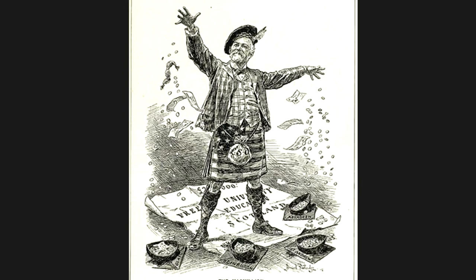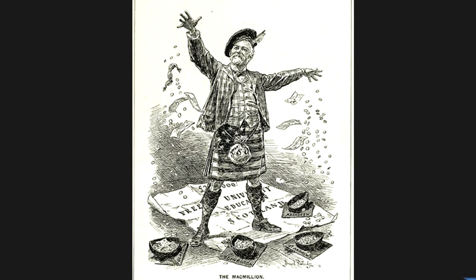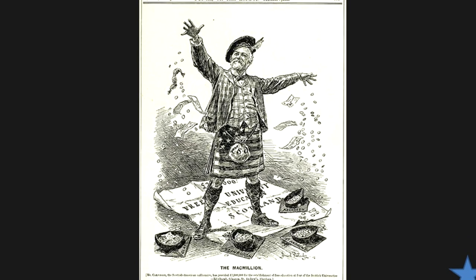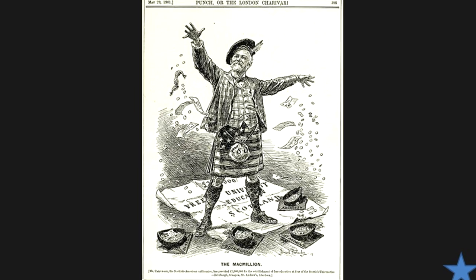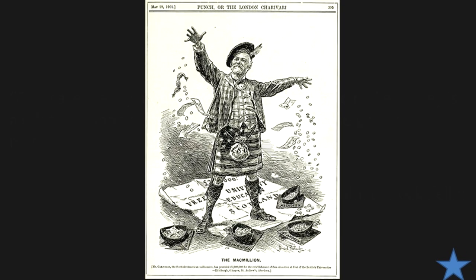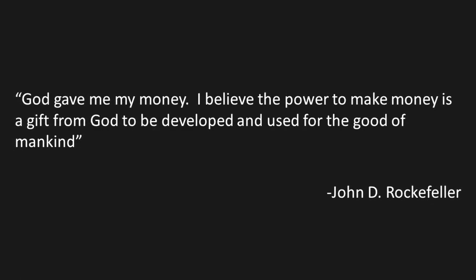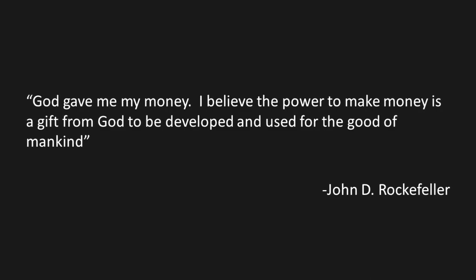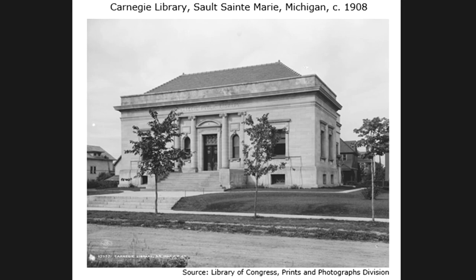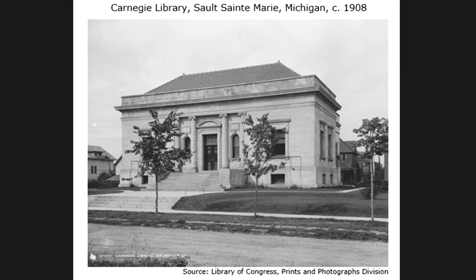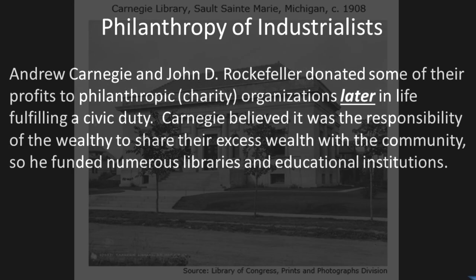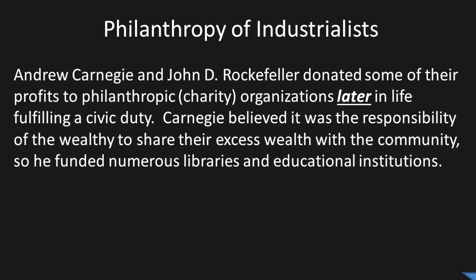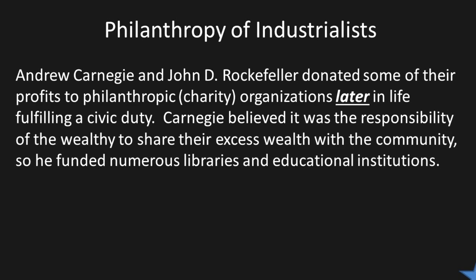Next image analysis: what is the meaning of this political cartoon? Just by looking at it you can kind of tell — that is Andrew Carnegie. What are rich entrepreneurs and big business owners going to do? Here's a quote by Rockefeller. What they're going to do is contribute to civic and social life in the United States by establishing philanthropic organizations dedicated to education and the arts. They used their vast wealth to fund libraries, museums, and schools — this is known as philanthropy of industrialists. Andrew Carnegie and John D. Rockefeller donated some of their profits to philanthropic organizations later in life.